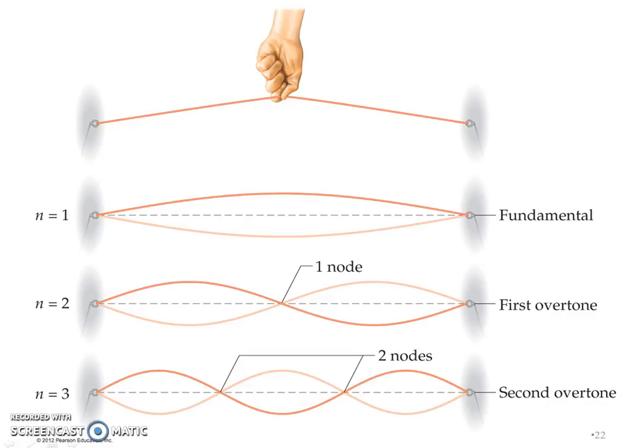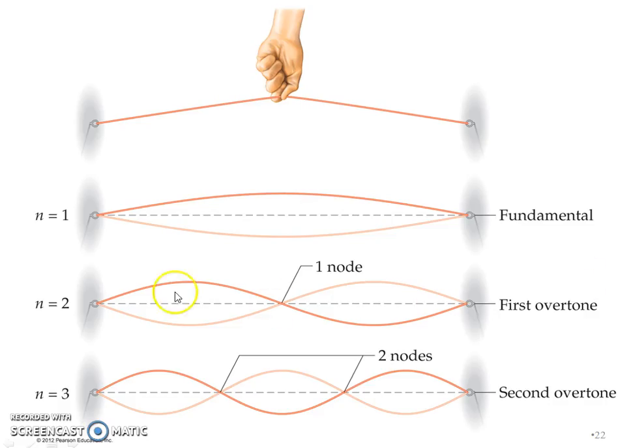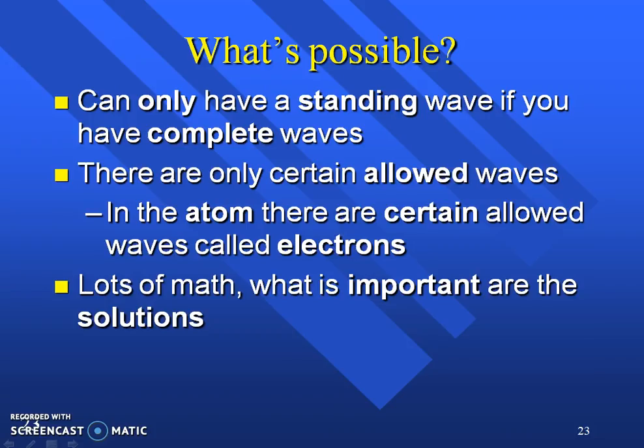The more energy levels you have, the more complex that atom is going to become. What's possible? You can only have a standing wave if you have complete waves. What is a wave? A wave is from one peak to another peak, a wavelength. These can only be standing waves if you have complete waves. They're only allowed a certain amount of waves.